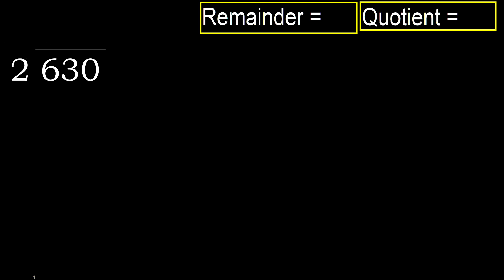630 divided by 2. 6 is not less than 2, so with 6, find which number multiplied by 2 is nearest to 6 but not greater.